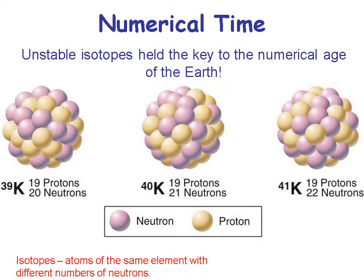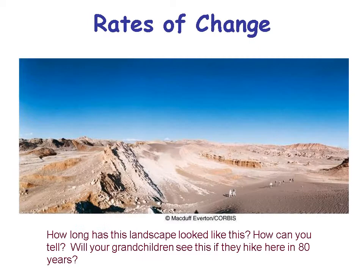Numerical time gives us the ability to use unstable isotopes to find out how old the Earth is. An isotope means atoms with the same number of protons but different numbers of neutrons. For example, potassium has 19 protons: potassium-39 has 20 neutrons, potassium-40 has 21 neutrons, and potassium-41 has 22 neutrons.